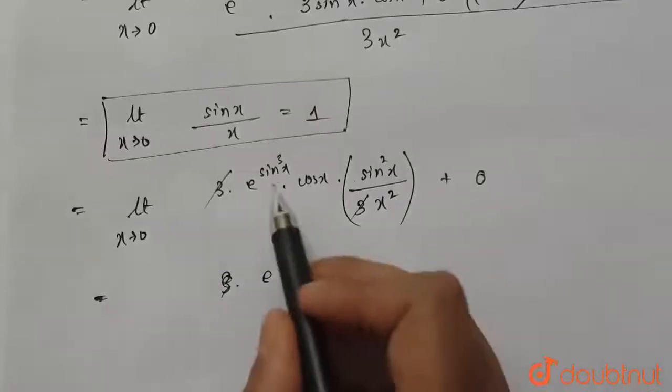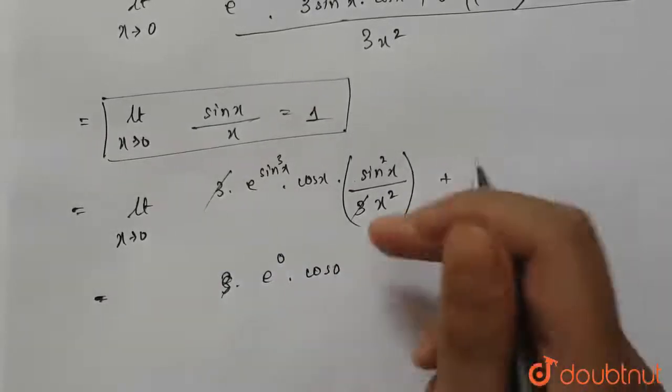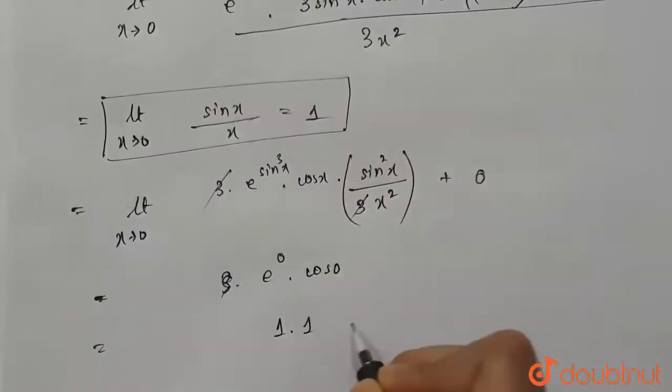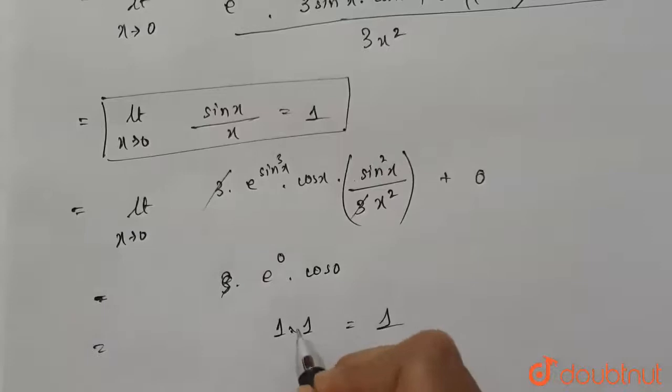E^0 · cos 0—now cos 0 is 1, e^0 is also 1, so 1 · 1 equals 1, and this is our required solution.